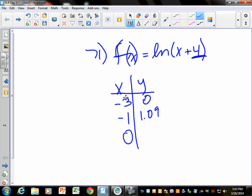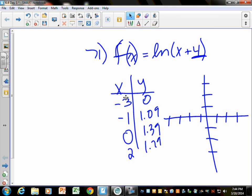If you pick 0, you're going to have ln of 4, which is 1.39. If you pick 2, that's going to be ln of 6. See how slow that's going up? That's a terrible graph. But at negative 3, it's at 0. Notice normally at 1, it's at 0. But I've moved back 1, 2, 3, 4.